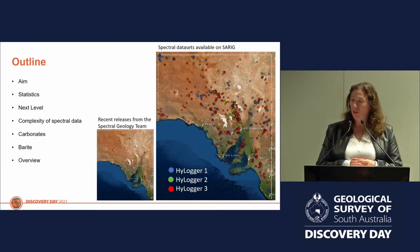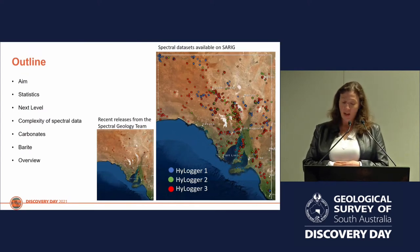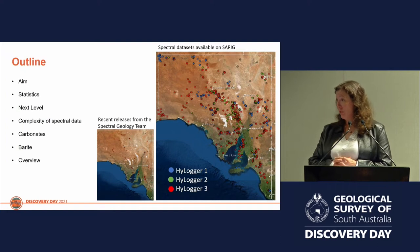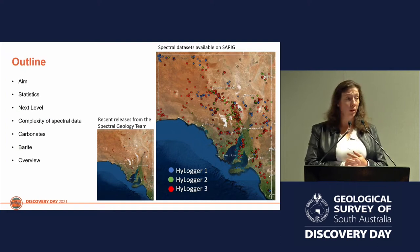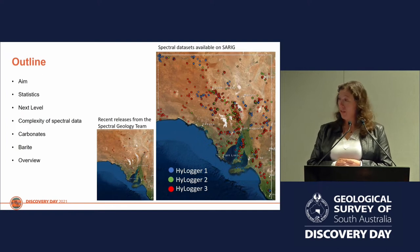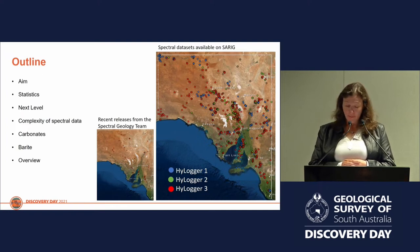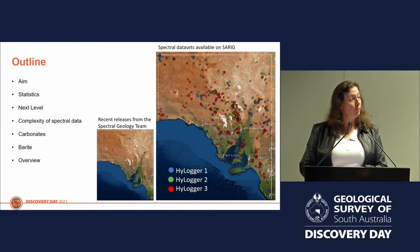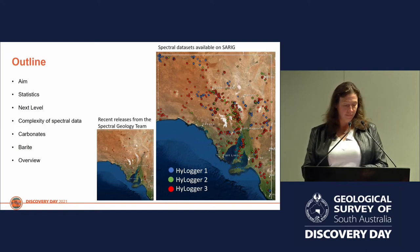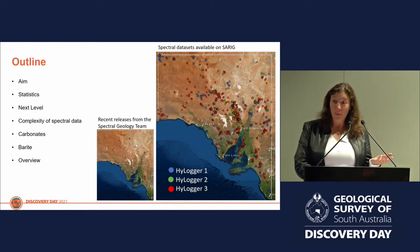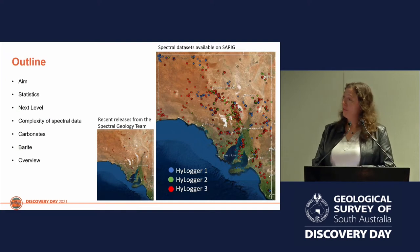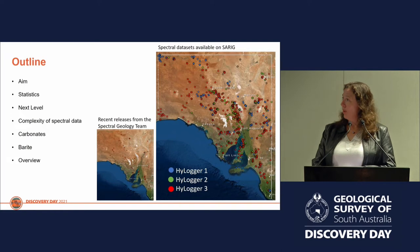The Spectral Geology team at the GSSA have been active participants of AusScope's National Virtual Core Library since 2009. As part of this national collaboration, our scope is to provide spectral characterisation of mineral systems across the state of South Australia. To date, we've provided over 400 kilometres of drill core data, all available on the National Virtual Core Library or the SARIG portal.